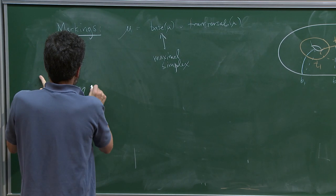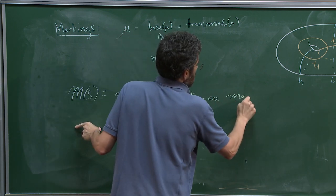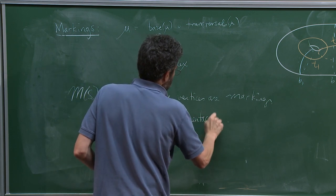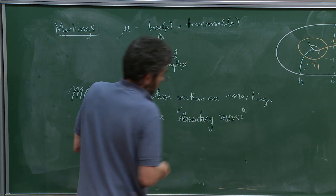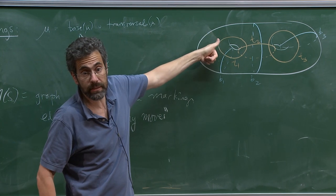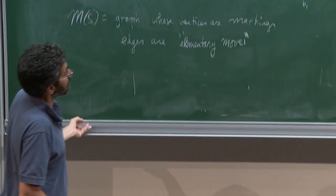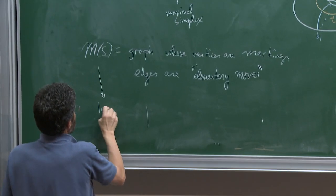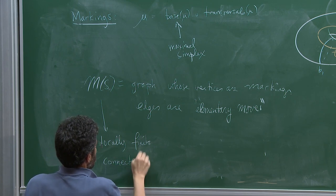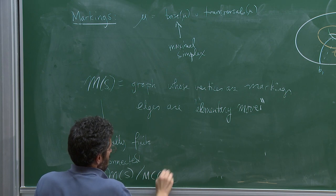That's a marking. Now we take M(S) to be the graph whose vertices are markings and whose edges are elementary moves. I don't want to talk about what these are exactly — they're not so important to our picture — except elementary moves need to be some kind of standard small change. For example, twisting an orange curve around its blue curve one twist is an elementary move. There are a couple of other elementary moves that rearrange the picture.